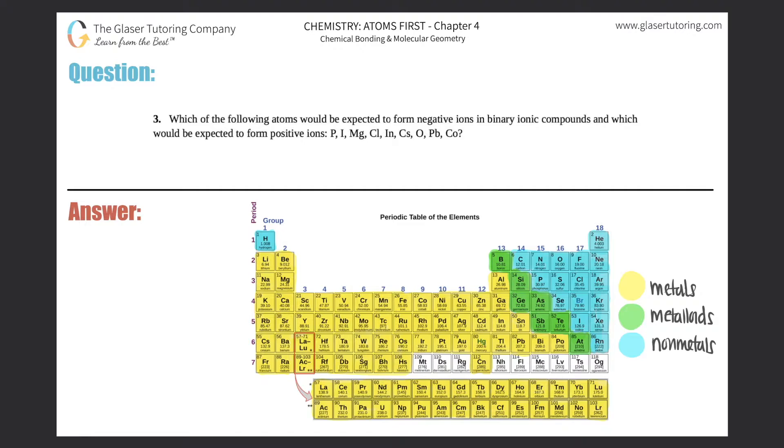Number three: which of the following atoms would be expected to form negative ions in binary ionic compounds and which would be expected to form positive ions? They give me the list of atoms: P, I, Mg, Cl, In, Cs, O, Pb, and Co.